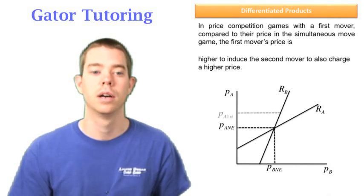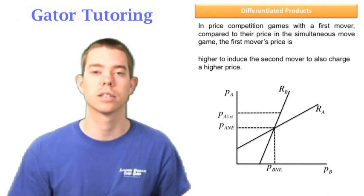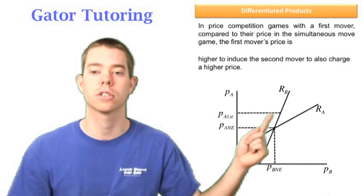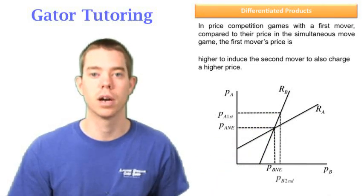In a first mover game, let's say A is the first mover - they're going to price a little higher. Then to find B's price, we go over to B's reaction function and down to find B's price.